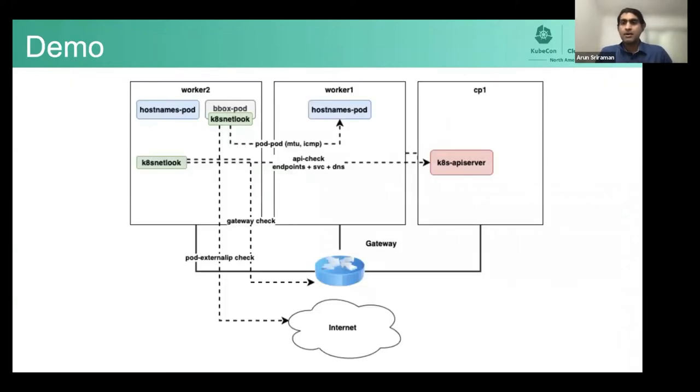We'll quickly go to the demo. I'm hoping I'll be able to give you five minutes on the demo. But what you'll see in the demo is that there are three nodes, two workers and a control plane node. k8s-netlook binary is installed on all of the nodes. And there is a busybox pod that I've deployed as well as the hostnames pod, which is my app backed by a service, fronted by a service.